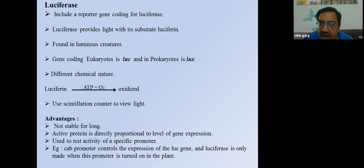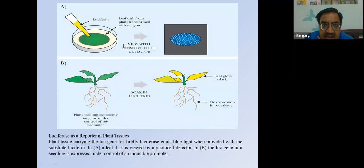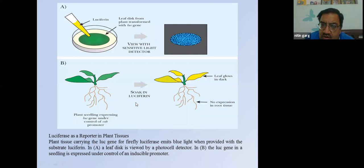To use the luciferase system: insert the luciferase gene into the plant, transform the plant, then view it in a scintillation counter. Plant seedlings expressing the lux gene under a control promoter are soaked in luciferin. If the leaves glow in the dark, gene transfer has successfully taken place.